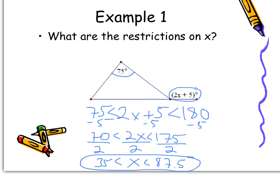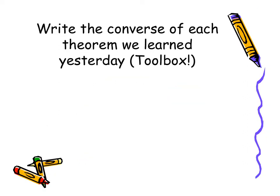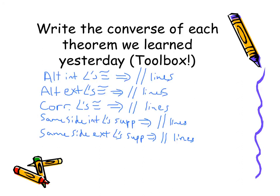Write down the converse of each theorem we learned yesterday — then we're going to use them. Here are the 5 converses: if alternate interior angles are congruent, then we have parallel lines. If alternate exterior angles are congruent, then we have parallel lines. If corresponding angles are congruent, then we have parallel lines. If same side interior angles are supplementary, then we have parallel lines. And if same side exterior angles are supplementary, then we have parallel lines.